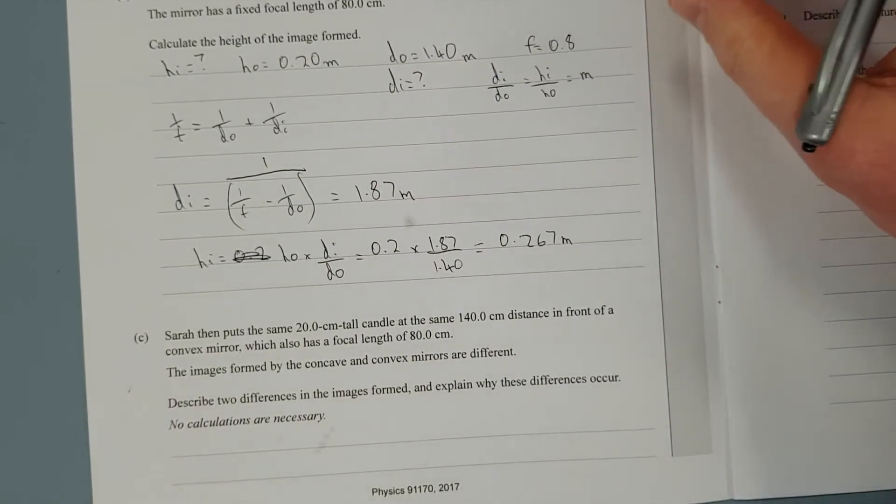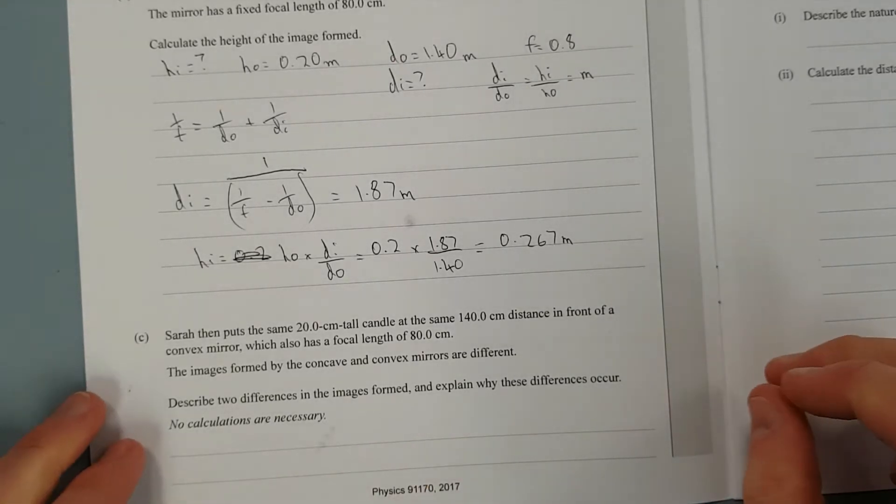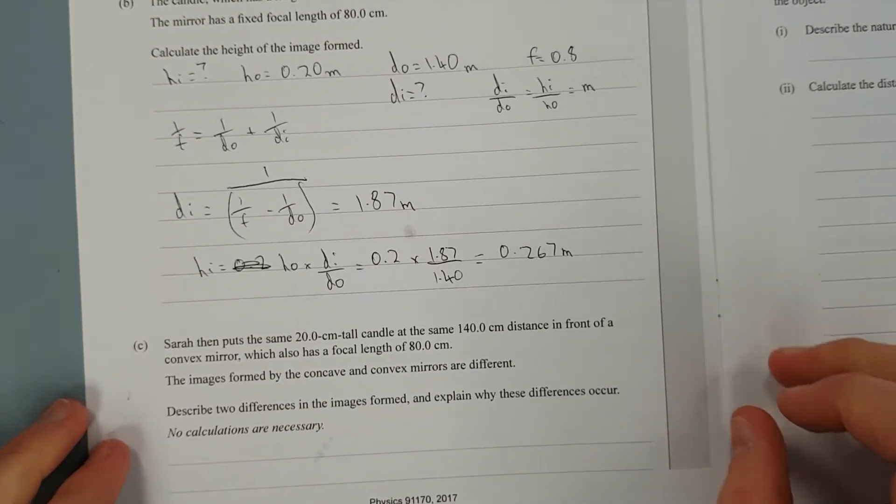Next question. Sarah then puts the same 20 centimeter tall candle at the same 140 centimeter distance in front of the convex mirror, which has a focal length of 80 centimeters. Images formed by concave and convex mirrors are different. Describe two differences in images formed and explain why these differences occur. No calculations are necessary. So I'm going to pause the video, write the answer, and then I'll discuss.